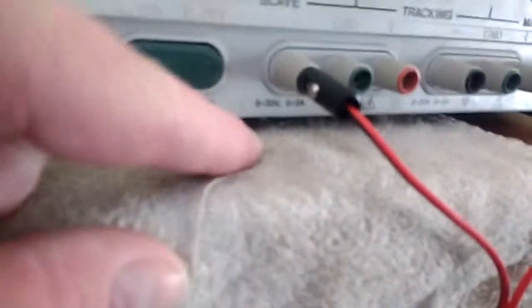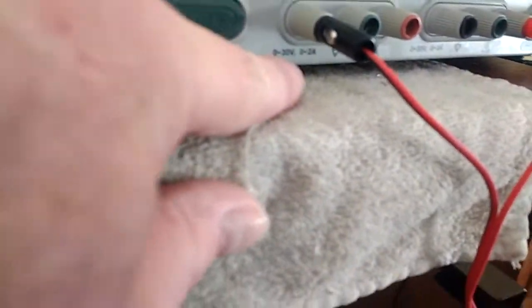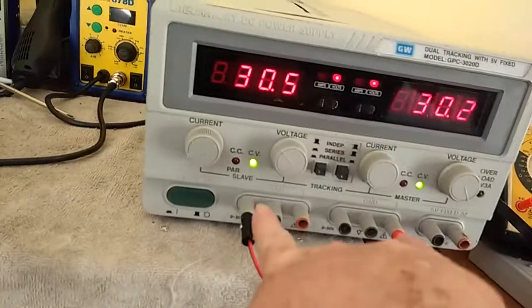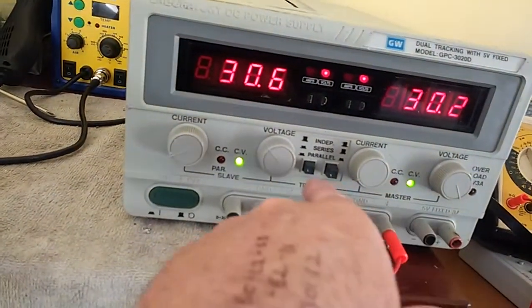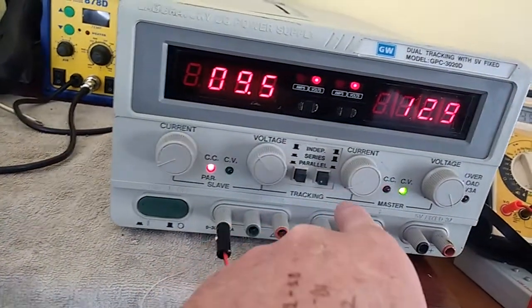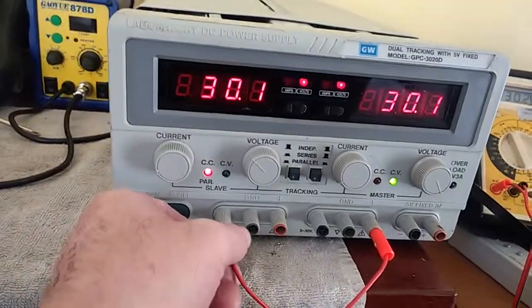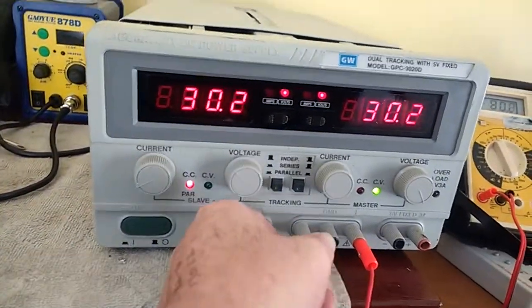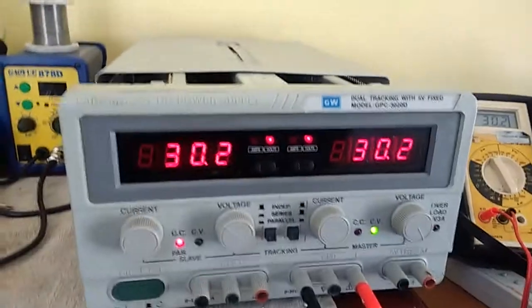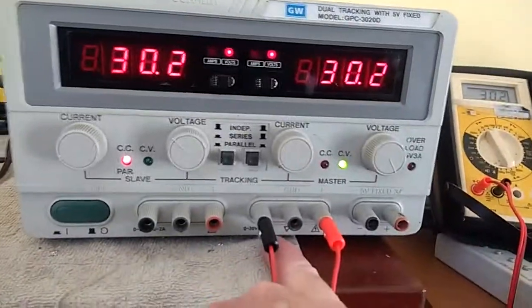Each channel, as you can see here, is capable of 30 volt at 2 amp, so 2 in series will give you 60 volt at 2 amp, and if you go to parallel mode, then obviously you'd have two power supplies at the identical voltage, at 30.2 volts, but now capable of 4 amp.